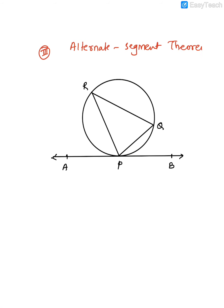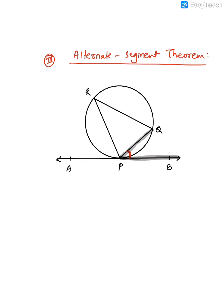A lot of people misunderstand the alternate segment theorem because they think of alternate angles — but there are no alternate angles here. The theorem states that the angle formed between the tangent and the chord is equal to the angle opposite to that chord on the circle. So angle BPQ is equal to angle PRQ. Note that the angle must be at the circumference, not at the center.